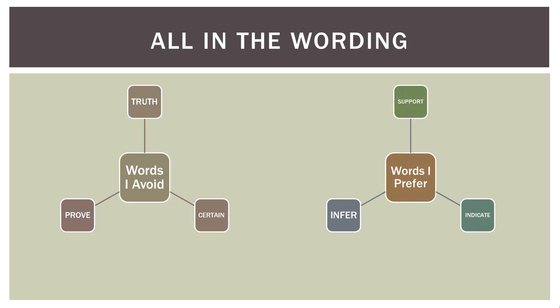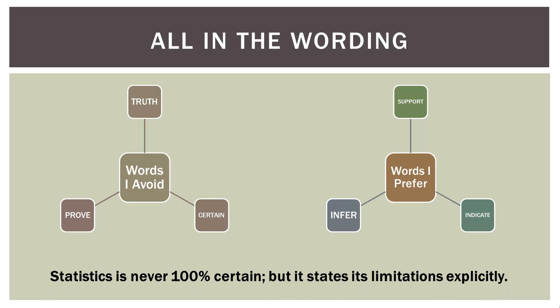Instead, I prefer words like: the data supports something, the data leads us to infer something, the data seems to indicate something. Some people might think I'm splitting hairs, but these words are more appropriate for statistics because statistics is never 100% certain. What it does well is state its limitations explicitly — we're always talking about probabilities. There is no certainty, no absolute truth, no absolute proof when doing statistics.